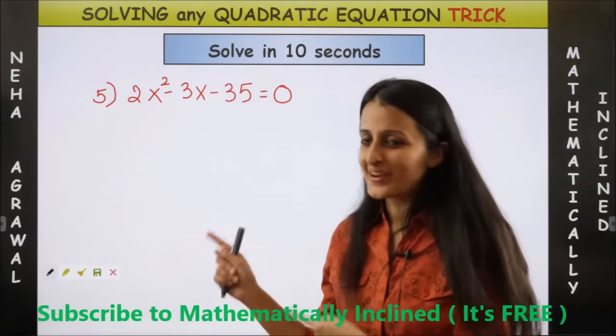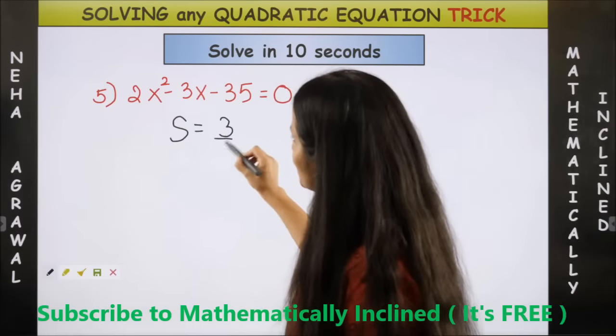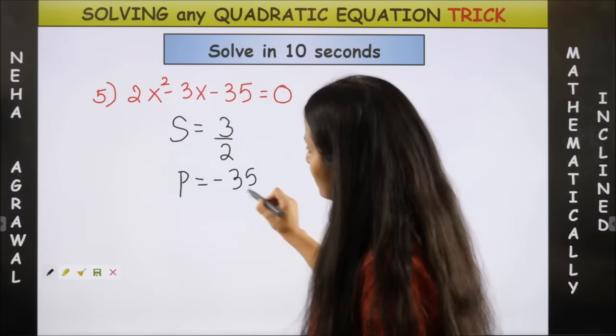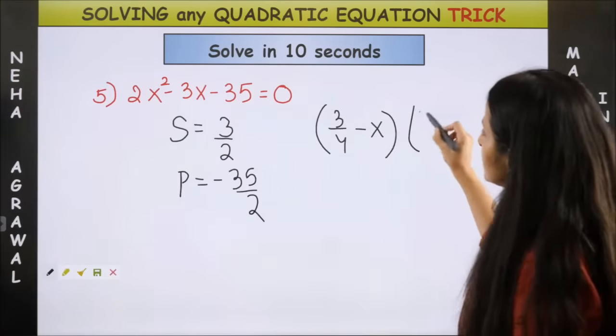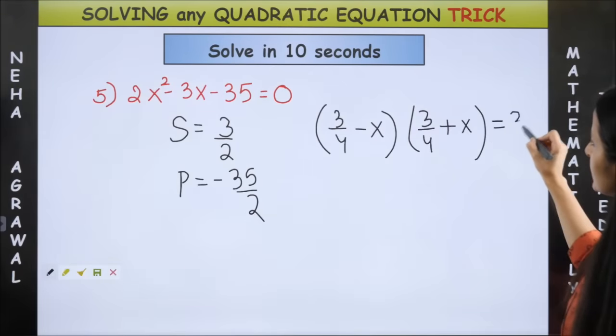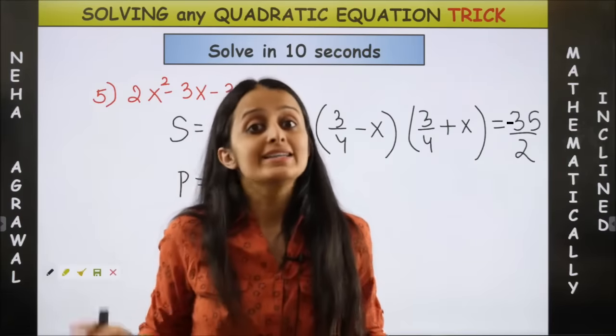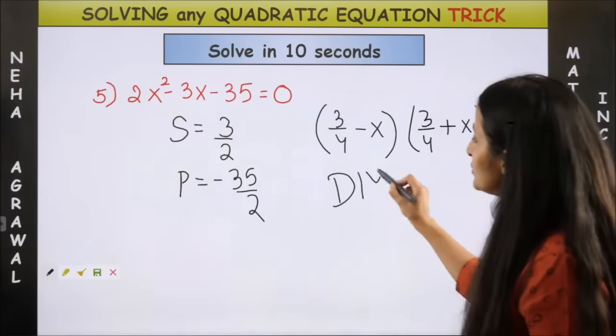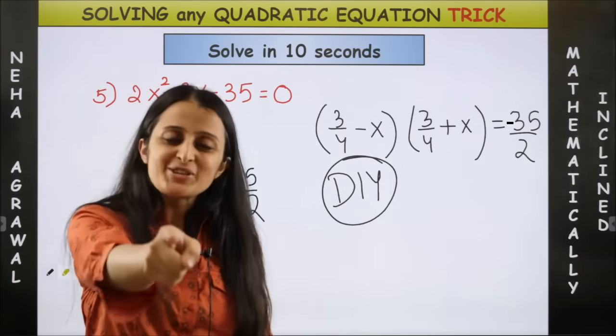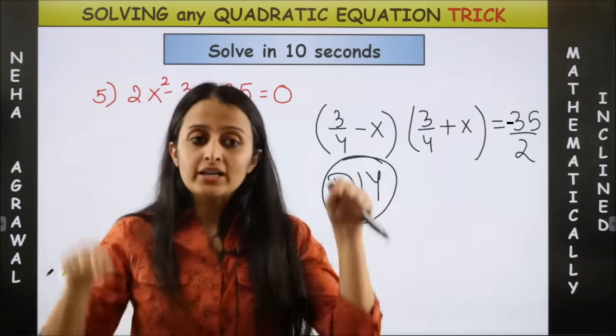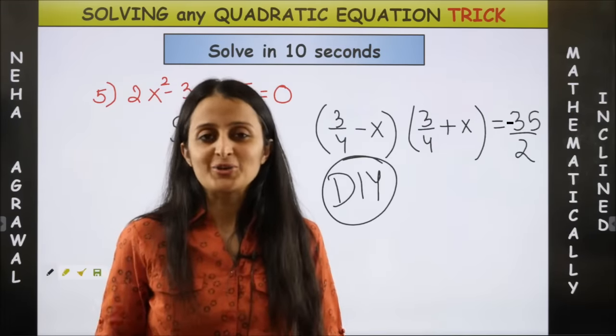You want more? Here's one more. Well watch it out again. Sum is what? 3 by 2. Product is minus 35 by 2. You know the factors you are going to make are 3 by 4 minus x. 3 by 4 plus x is 35 by 2. Now I won't give the answer. It's your time. Yes. This becomes your do it yourself question. So I have given you a hint and now it's your chance to give the answer to this one in the comment section below. And the top 3 correct answers would get named in my upcoming video.